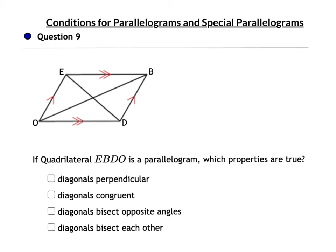In question 9, you have to know your properties. The question tells us it's a parallelogram. In a parallelogram: opposite sides are parallel, opposite sides are congruent, opposite angles are congruent, consecutive angles are supplementary, and diagonals bisect each other. Are the diagonals perpendicular? Only in a rhombus — we don't know that. Are the diagonals congruent? Only in a rectangle — we don't know that. Does the diagonal bisect opposite angles? Only in a rhombus. The correct answer is: the diagonals bisect each other, which is true in every parallelogram. There may be more than one correct property.